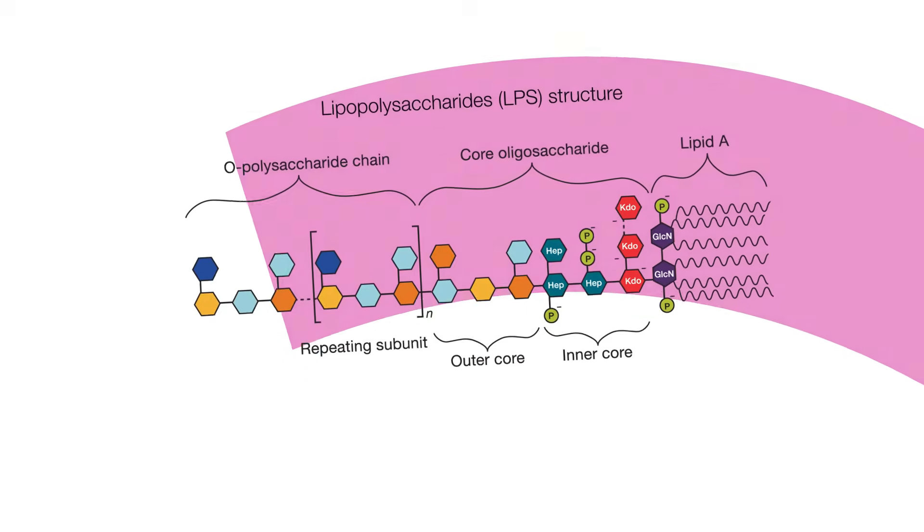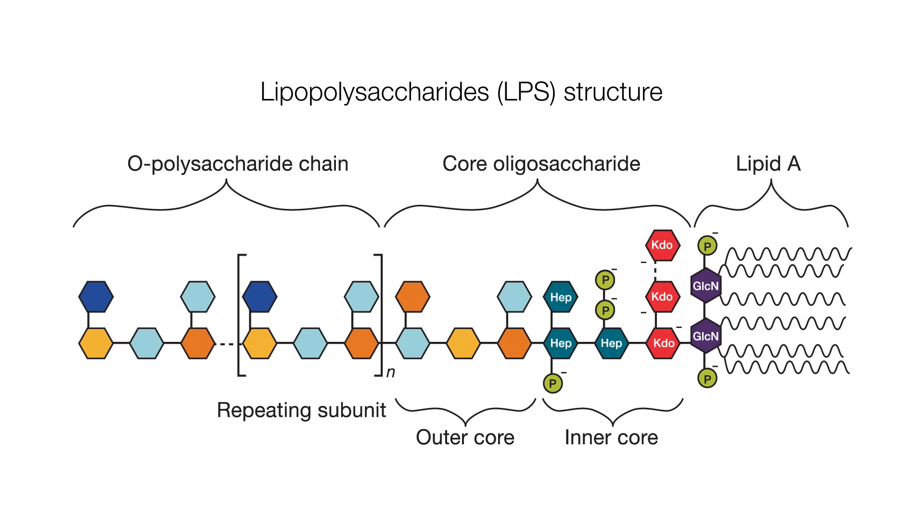These LPS components known as endotoxins create a dangerous contamination that can trigger shock, inflammation, or sepsis in animals and tissue culture. Endotoxins are heat-stable molecules associated with the outer membranes of certain gram-negative bacteria.